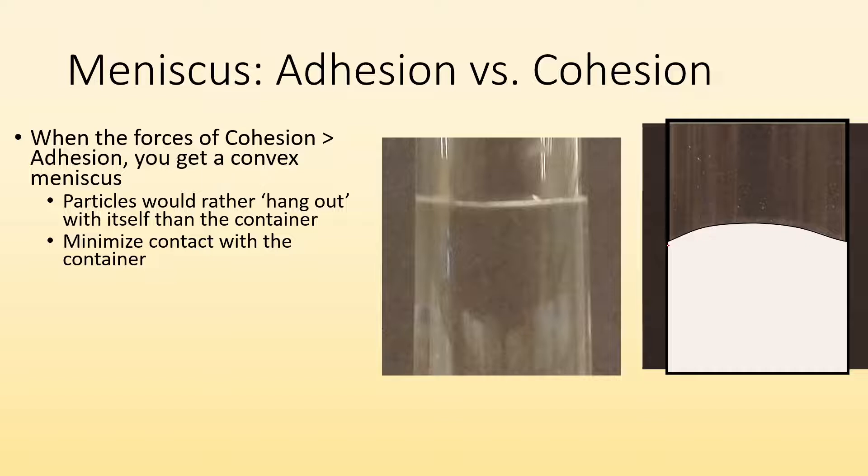And the way that happens is, if we got away from the side of the container and mounded up in the middle, we would minimize the contact with that surface.